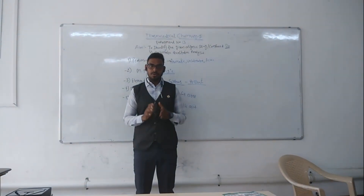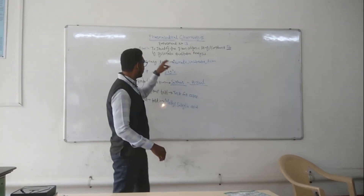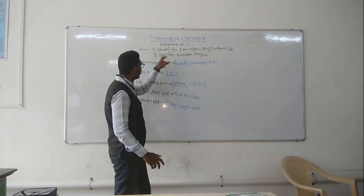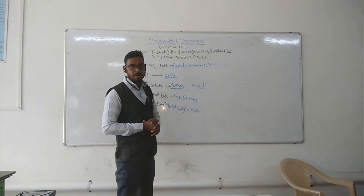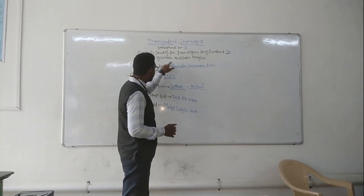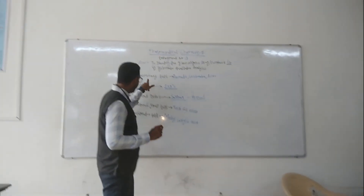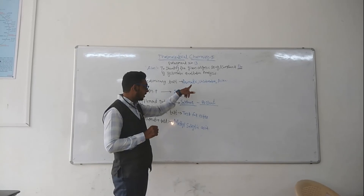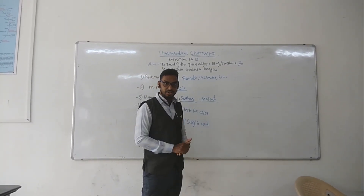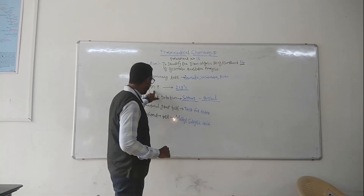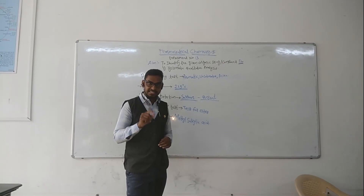We have now completed experiment number 13. Experiment number 13 is a method to identify a given organic compound by systematic qualitative analysis. We performed the preliminary test and concluded it is an aromatic, acidic, unsaturated compound with a boiling point of 219°C.